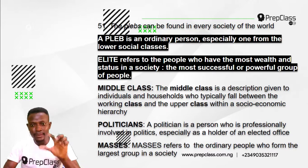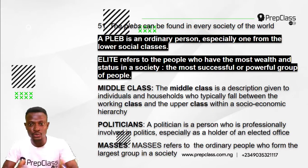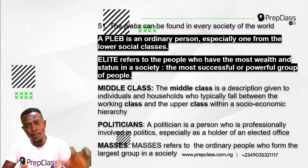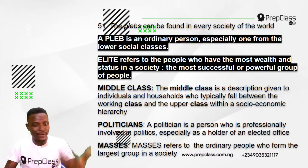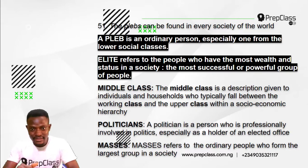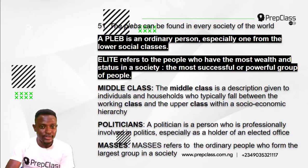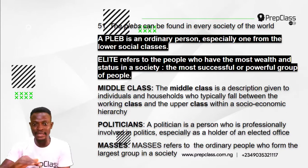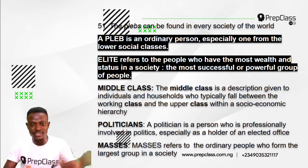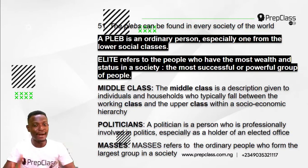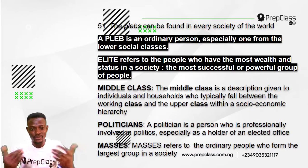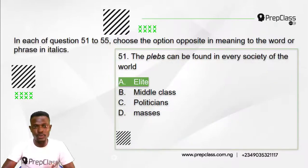It is not 'middle class' — the middle class describes individuals who fall between the working class and the upper class within the socioeconomic hierarchy; they are not extremely poor nor categorized as rich. It is not 'politicians' — a politician is a person professionally involved in politics, especially as a holder of an elected office. It is not 'masses' — masses refer to the ordinary people who form the largest group in a society.